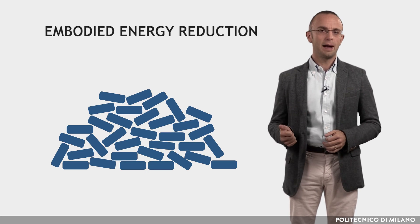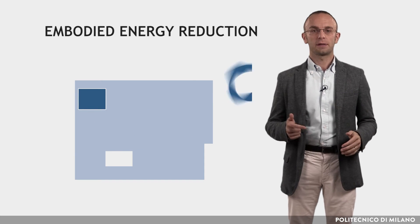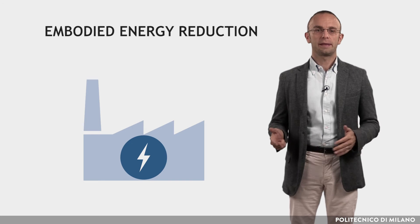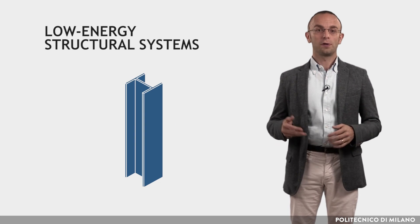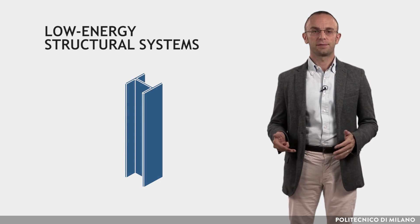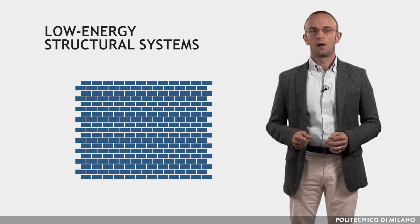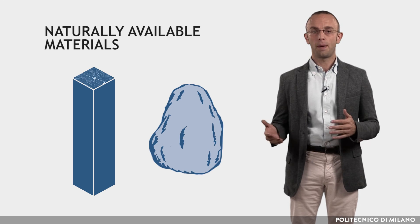Some general recommendations can be listed to reduce embodied energy. Minimize the resource quantity. Make choices that ensure reduction of scrap materials. Select low embodied energy materials and low energy construction systems. Use low energy structural systems, like load bearing walls in place of steel frames. Use naturally available materials, especially organic renewable materials, like timber or bamboo.